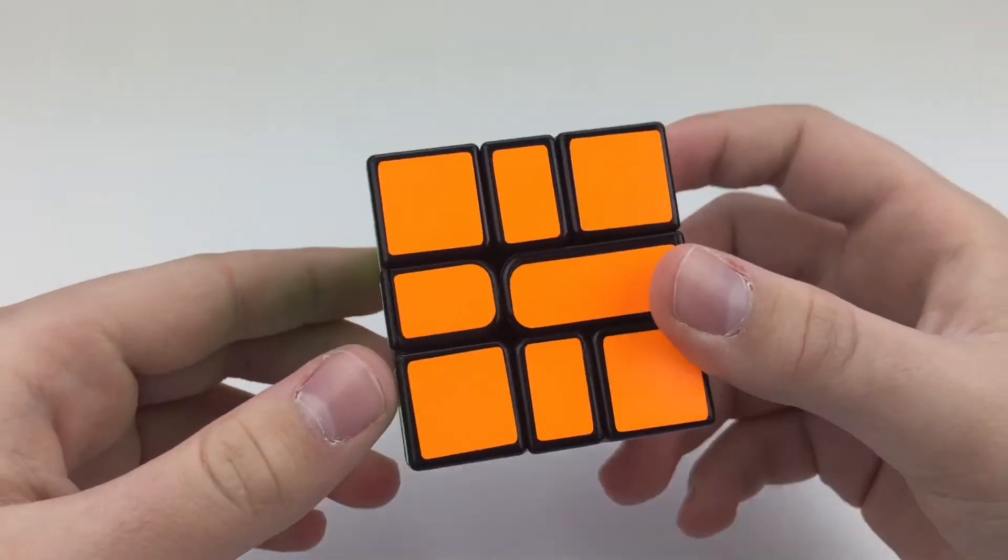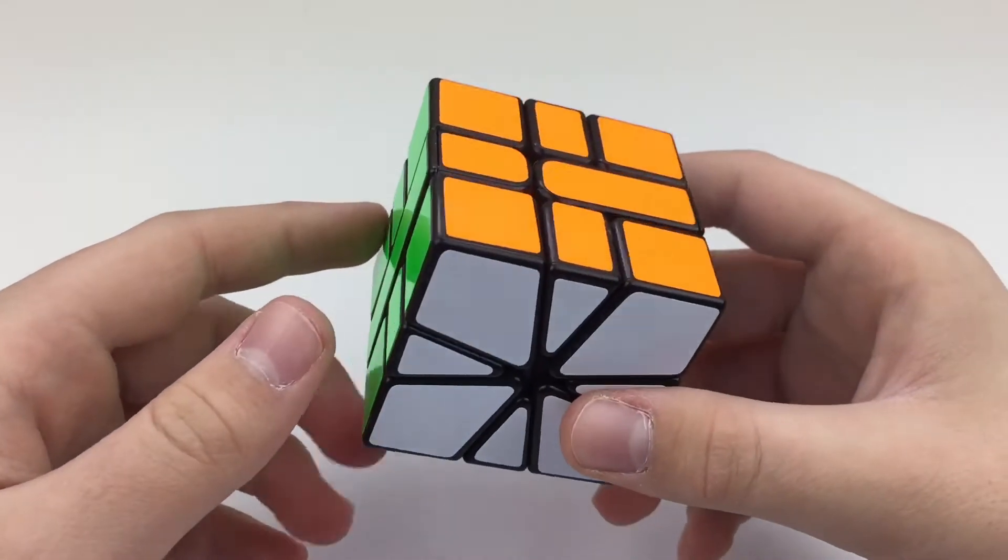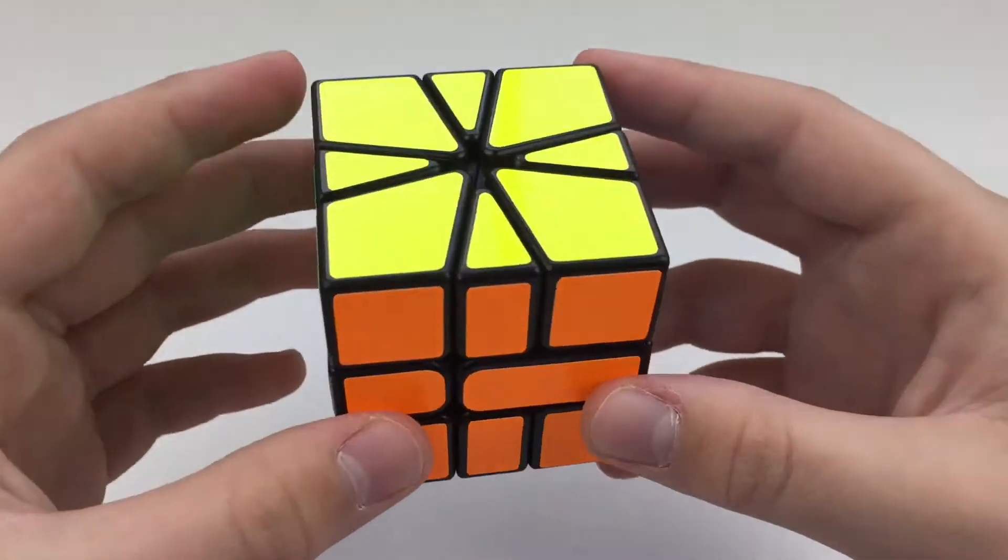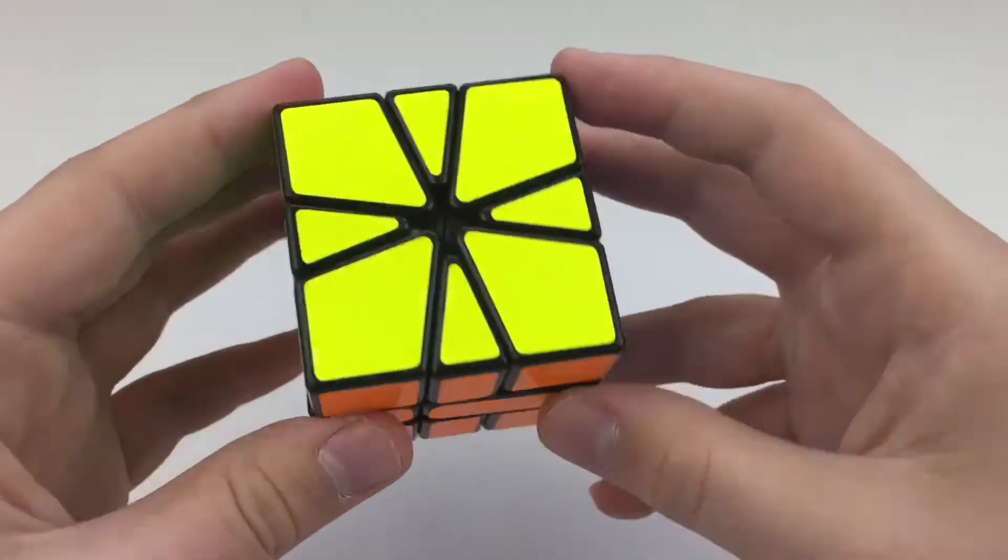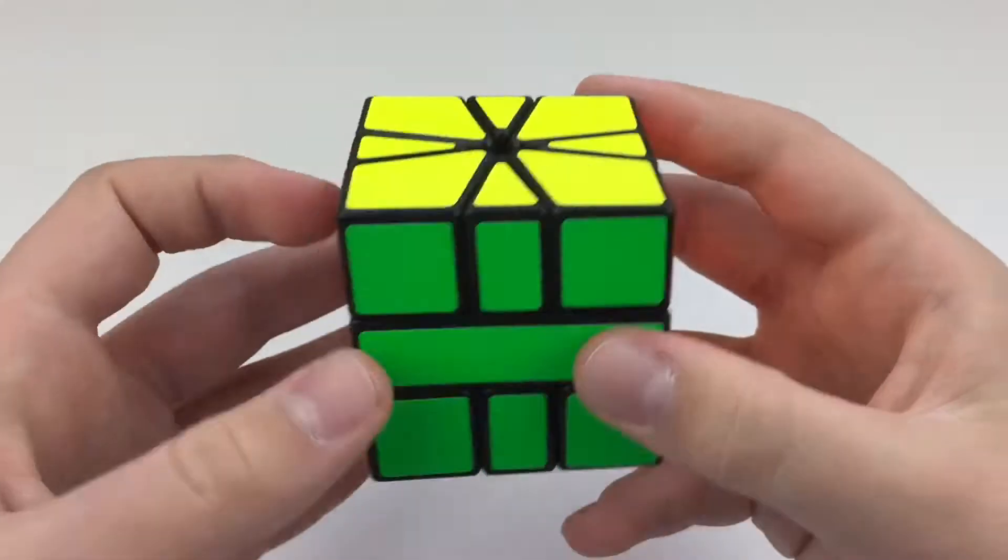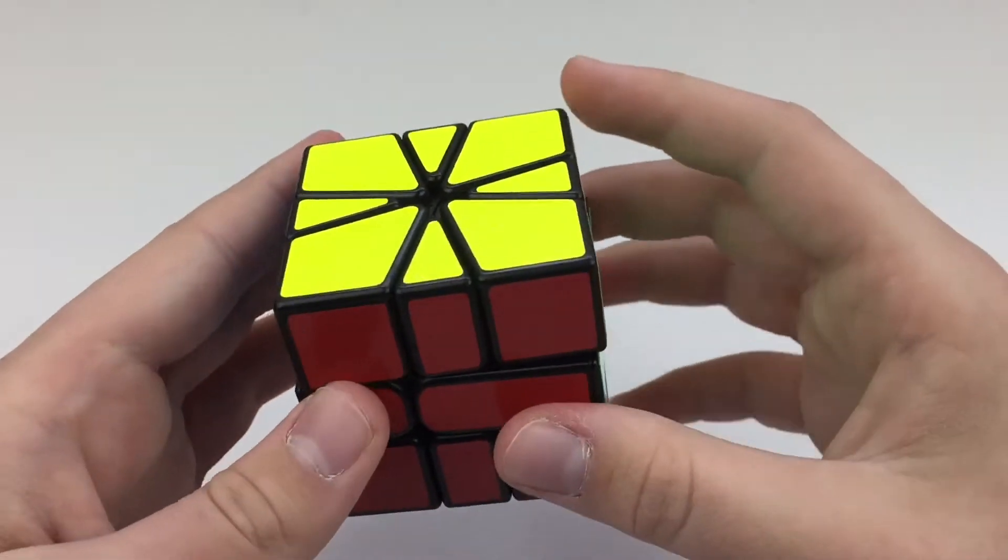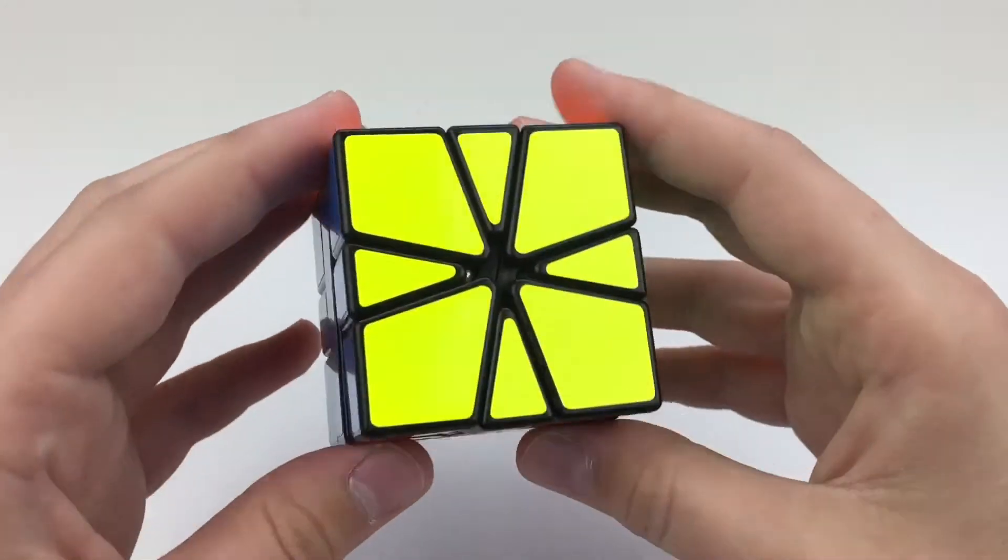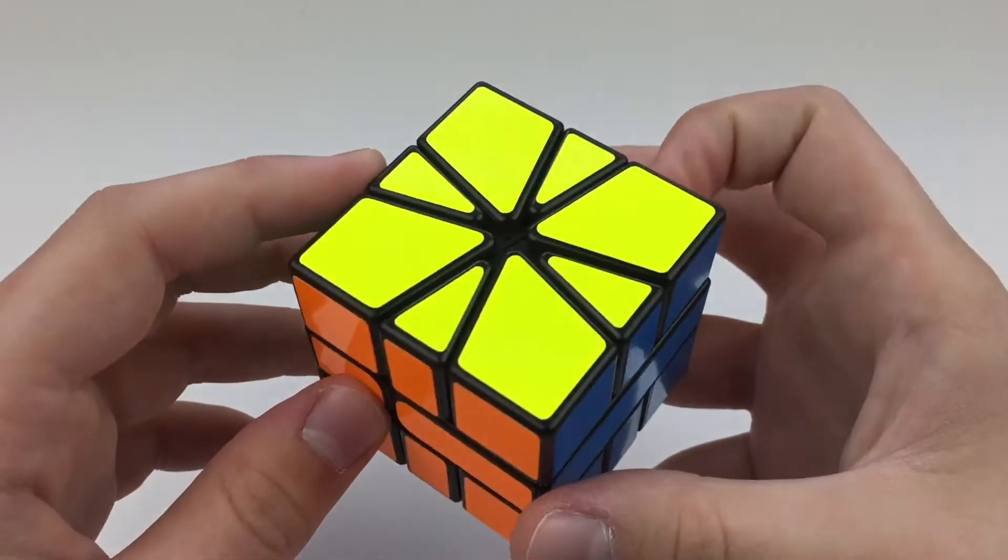But one major thing that went wrong was when I put the magnets in, I got some super glue on the stickers, and they kind of got all messed up. So I thought it would be best if I re-stickered it. And, well, I was at it, I re-stickered it with my own sticker shades.